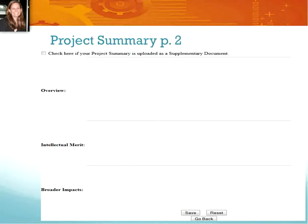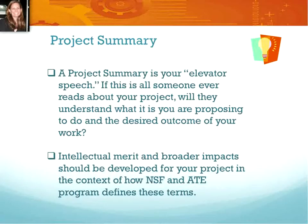At the top of the project summary page there is an option that says 'Check here if your project summary is uploaded as a supplementary document.' The only reason you would do this is if your project summary includes a lot of symbols such as mathematical symbols or Greek letters that a text box wouldn't support. That is not typical to ATE projects, so unless your summary includes a lot of special characters, you should plan to use the text boxes.